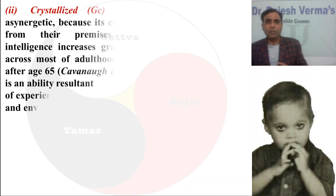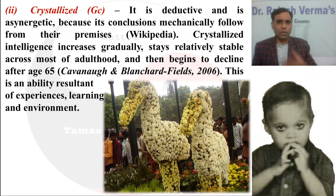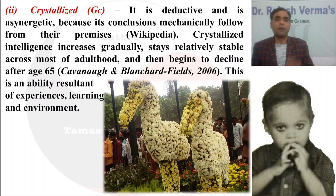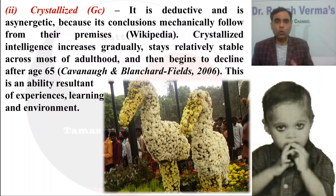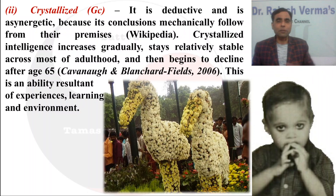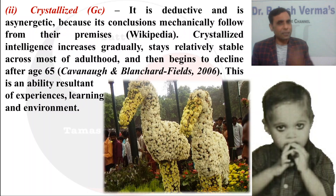Now let us discuss crystallized intelligence, abbreviated as GC. It is deductive and asynergetic — just the opposite of fluid intelligence. Fluid intelligence is inductive and synergetic; crystallized intelligence is asynergetic and deductive. Deductive means reasoning from general to specific, whereas inductive means from specific to general. Crystallized intelligence is deductive and asynergetic because its conclusions mechanically follow from their premises — just opposite to fluid intelligence.